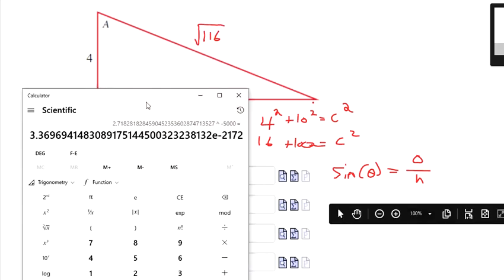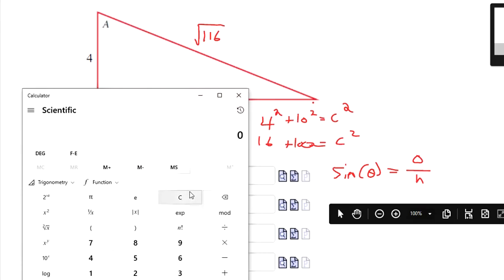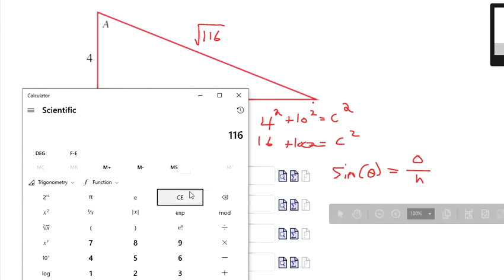I think that can be simplified a bit too. Like 116, what you want to do when you simplify square roots is you want to see if you can pull out a perfect square root from it. Like the square root of 4, the square root of 9, the square root of 16.